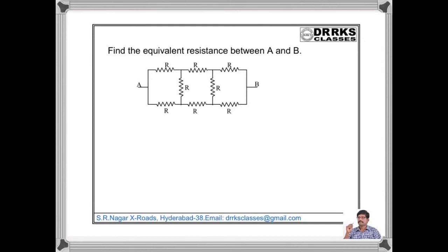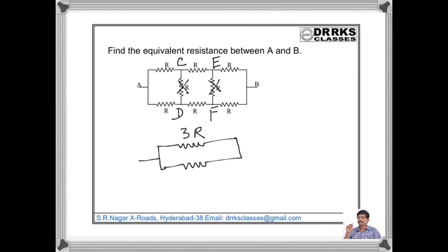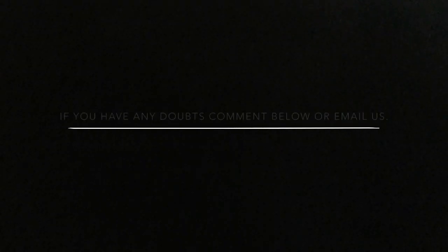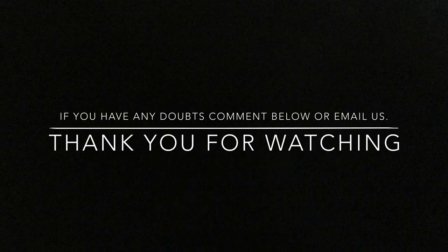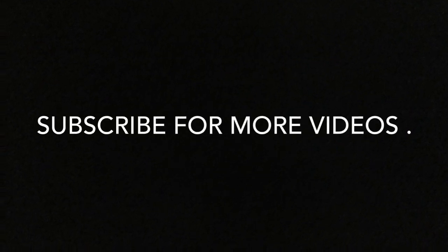Let us find the effective resistance between A and B. Here, points C and D are at the same potential when a battery is connected between A and B. Again, points E and F are also at the same potential. There is no current flowing through this resistor, and again no current through this resistor. The effective circuit then has 3R and 3R connected in parallel between A and B. The effective resistance between A and B is 3R by 2.